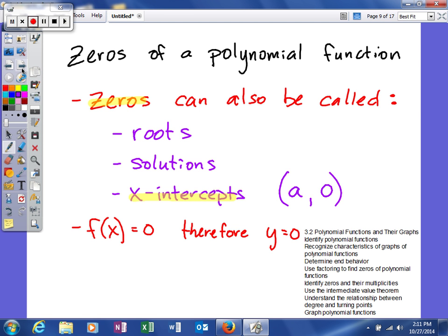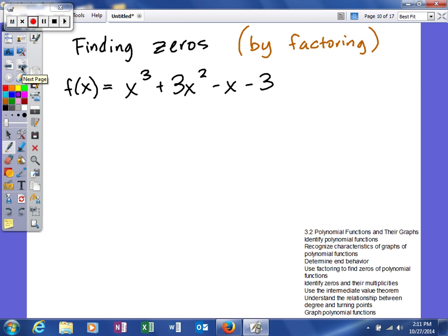So let's see if we can look at a couple examples of how to find zeros of a polynomial function. Here's the first one. And right now, the first way we're going to study finding zeros of a polynomial function is by factoring. So what we're going to do, this is something we've done in the past. We're going to set this equal to zero, and then we're going to try to factor this polynomial.